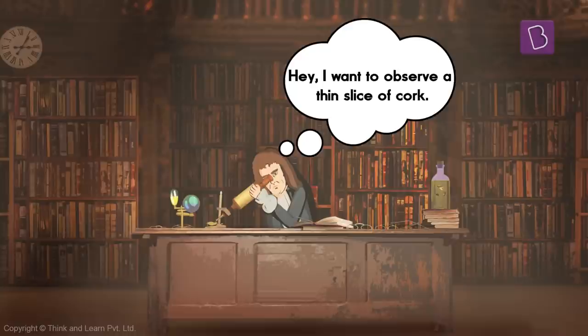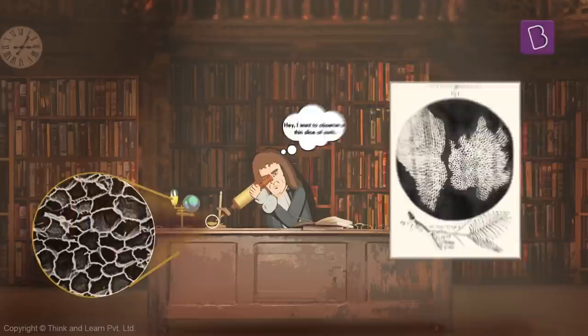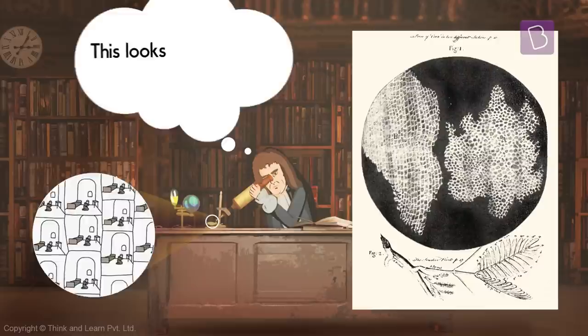What he saw under this thin slice of cork is what we remember him for today. He saw a bunch of compartments. Since he thought these compartments looked like the small rooms that monks used to stay in, he decided to call them cells based on the term cellular, which is what the monk rooms were called. This is the story of how the cell was discovered and got its name.